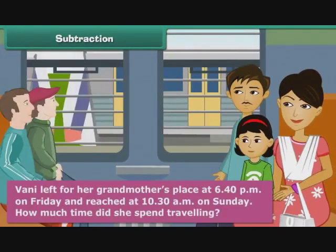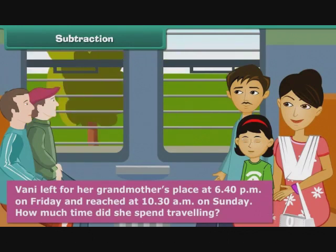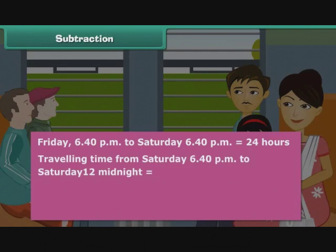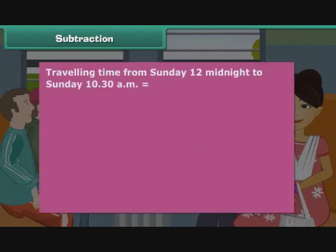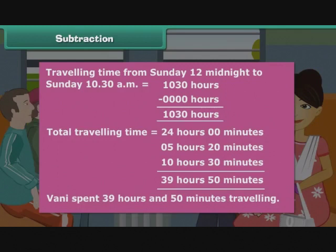Vani left for her grandmother's place at 6:40 p.m. on Friday and reached at 10:30 a.m. on Sunday. Friday 6:40 p.m. to Saturday 6:40 p.m. = 24 hours. Using the 24-hour clock: Saturday 6:40 p.m. to Saturday midnight = 2400 − 1840 = 5 hours 20 minutes. Sunday midnight to Sunday 10:30 a.m. = 10 hours 30 minutes. Total travelling time = 39 hours and 50 minutes.